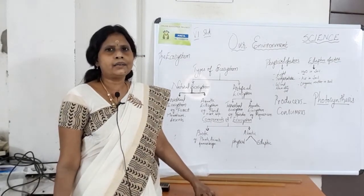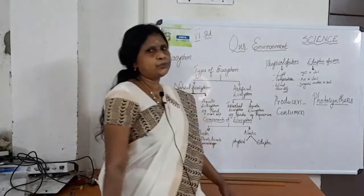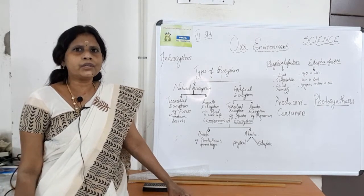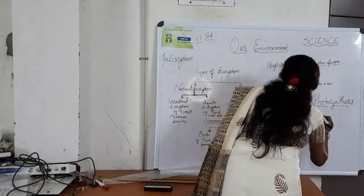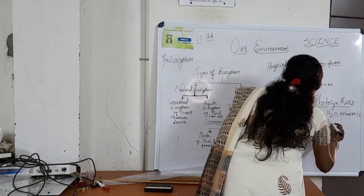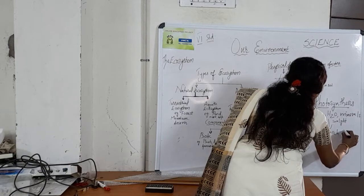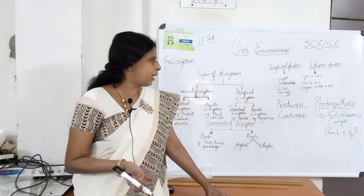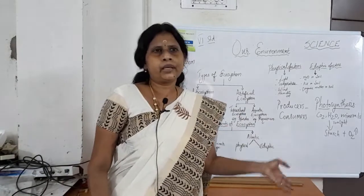Producers use sunlight or light energy and convert it into chemical energy. Human beings and other animals are called consumers because they cannot prepare their own food. Photosynthesis is a conversion of light energy into chemical energy. The light energy is used to convert carbon dioxide, water, and other minerals in the presence of light energy into starch. The by-product is oxygen. During respiration, we take in oxygen and exhale out carbon dioxide, so carbon dioxide is the by-product of respiration. But in photosynthesis, oxygen is the by-product which is released into the atmosphere.